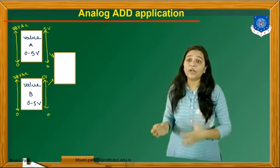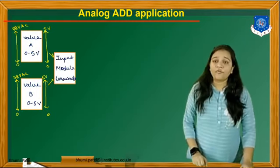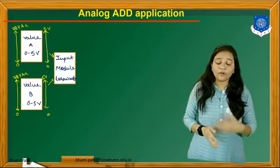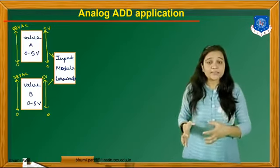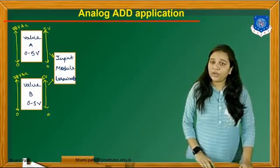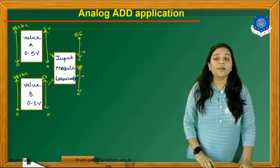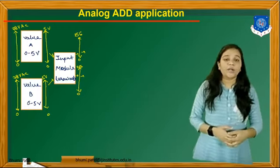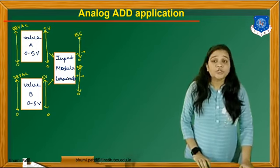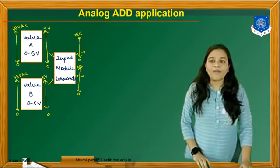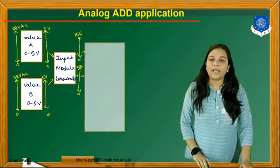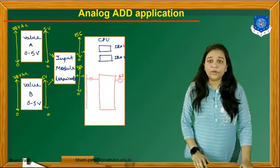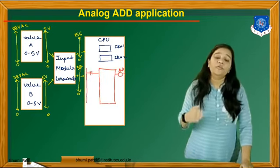First, we have to convert this 78V AC to 5V DC. We take values A and B and convert 78V into 5V using the required conversion. This DC voltage is applied to the input module terminal. After that, we convert this 5V DC into bits. Here 8-bit data is given, so we take two 8-bit data because two values are given — A and B. After that, this bit is given to the CPU at IR01 and IR02.